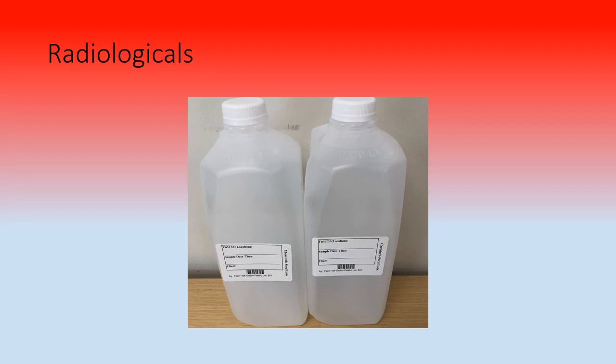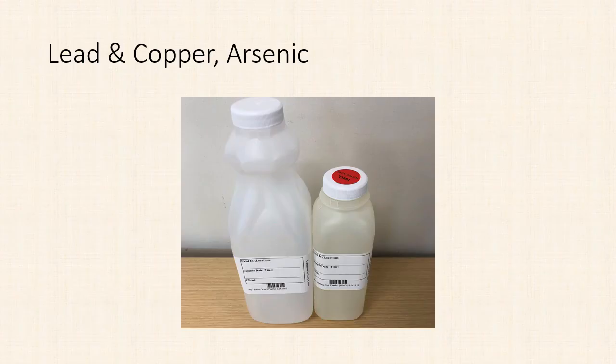If you're doing radiologicals, you'll get two half-gallon containers and we need both of them. If you have two wells and we send four bottles, don't take one for each well and save the extras — we need both bottles for one sample. For lead and copper sampling in homes, use the quart bottle without acid, because we don't want homeowners handling nitric acid — we'll add it when we receive it at the lab.